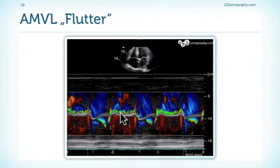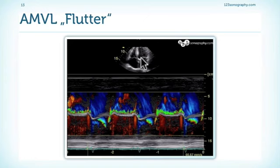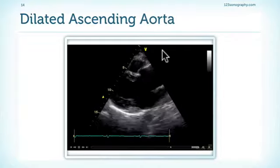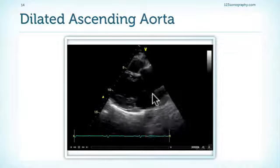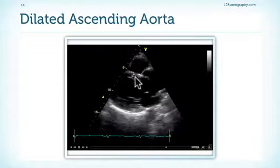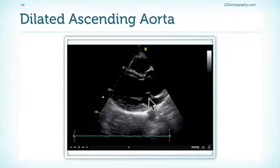An M-mode tracing of the anterior mitral valve leaflet shows flutter of the anterior leaflet caused by an eccentric jet blowing into it during diastole — a phenomenon frequently seen and which can also be heard, corresponding to the so-called Austin-Flint murmur. Additionally, a dilated aorta is seen in many patients; the dilatation can either be the cause of aortic regurgitation or can be associated with bicuspid valves, which frequently have regurgitation.